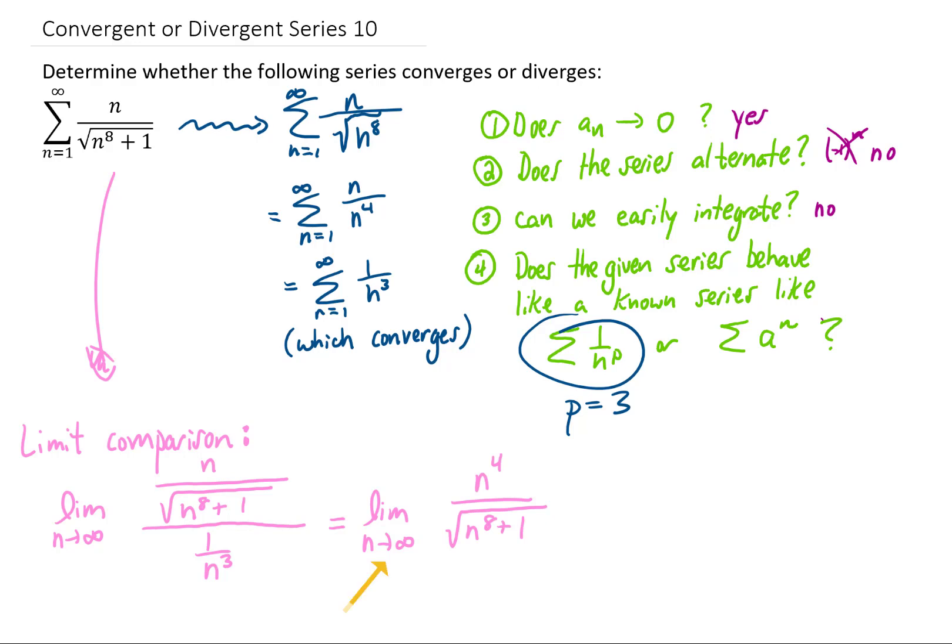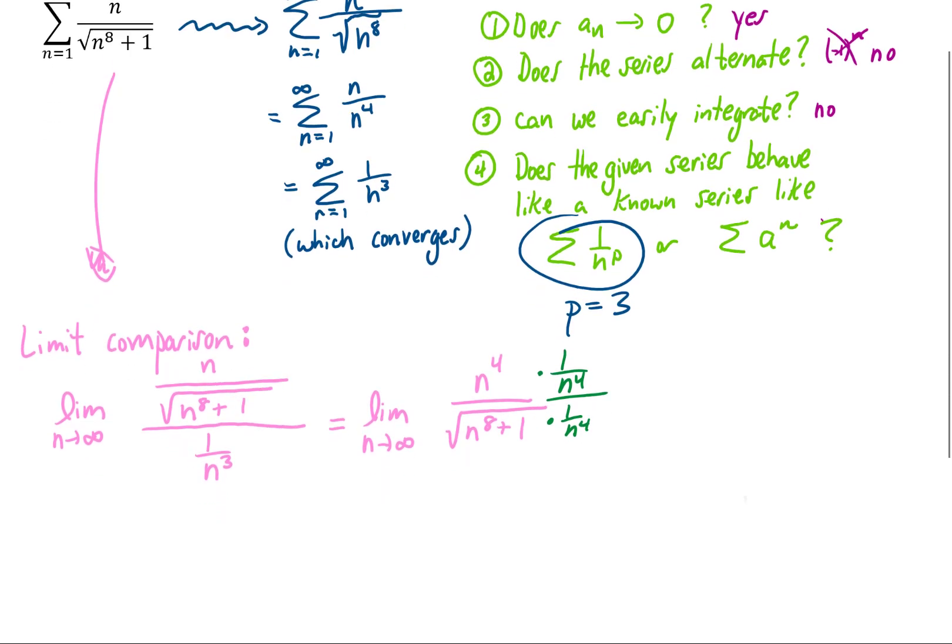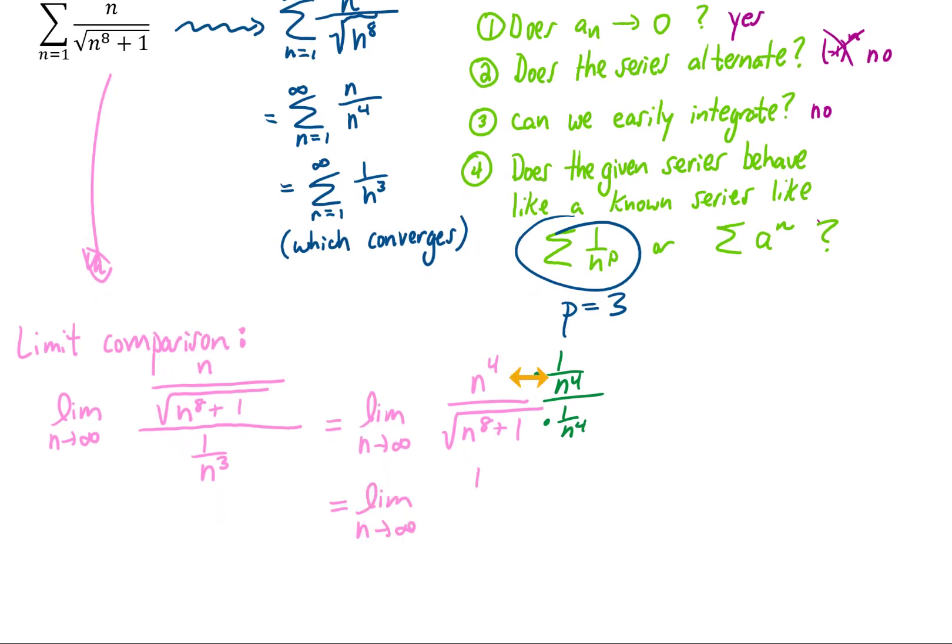Of course, plugging in n equals infinity at this point would give us infinity over infinity. So what we're going to do is we're going to multiply both the numerator and the denominator by 1 over n to the 4th. In the numerator, that simplifies things quite a bit. n to the 4th divided by n to the 4th just gives us a 1.